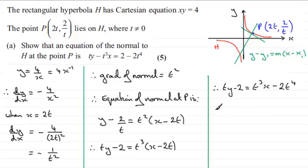And then if we just simply take away this term from both sides and add 2 to both sides, we end up with the result that we've got to show: ty minus t cubed x equals 2 minus 2t to the power 4.